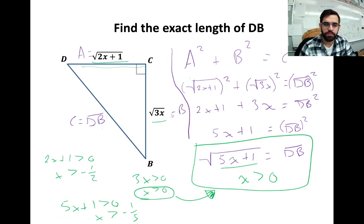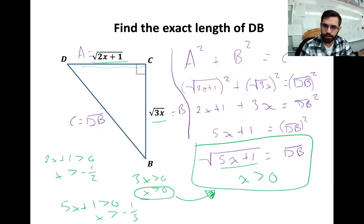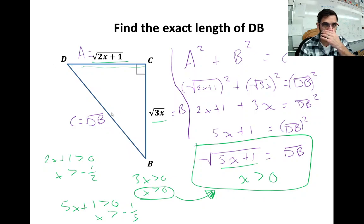It doesn't really matter which side you call a and b, but the hypotenuse has to be c — DB has to be c. If we square each of the side lengths, we get (2x + 1) + (3x) = DB², and collecting like terms gives 5x + 1 = DB². Taking the square root of both sides, DB = √(5x + 1).